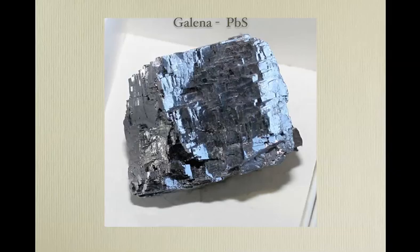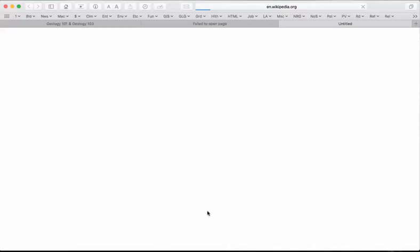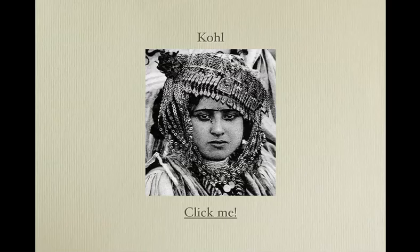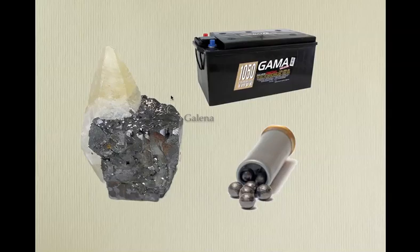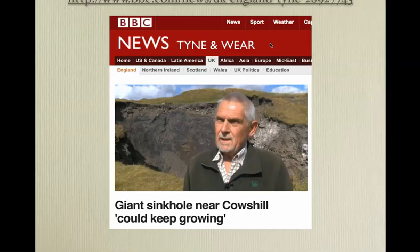Here's galena — it's a sulfide, PbS. It is incredibly dense. In the Arabic world a long time ago, you would take galena, let it oxidize, put it on your eyes — people thought it made women beautiful. What they didn't know was they were getting lead into their bodies. We now use lead in batteries, shot, things like that.